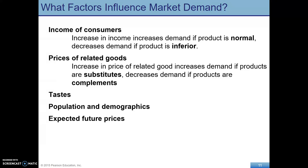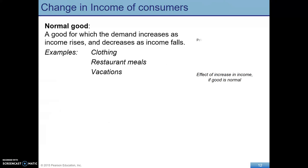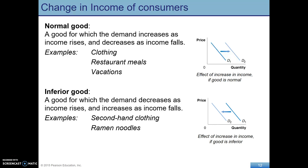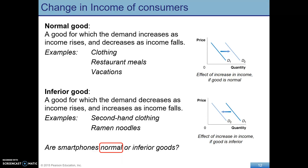We'll see similar shifters for the supply curve. A normal good — examples would be things like clothing: as your income goes up, your demand increases, things like eating out at restaurants, vacations. Versus an inferior good: as your income goes up, your demand for these things falls — things like secondhand clothing, ramen noodles. What about smartphones? As your income goes up, demand for smartphones would go up, so smartphones are normal goods.